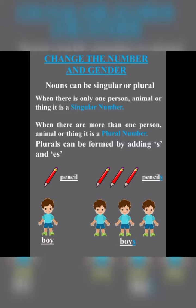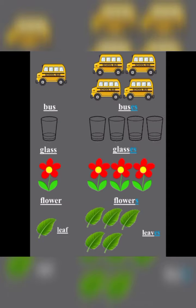Look at the examples on the screen. Pencil becomes pencils — 's' is added. Boy becomes boys — 's' is added. Bus becomes buses — 'es' is added (b-u-s-e-s). Glass becomes glasses — 'es' is added (g-l-a-ss-e-s).